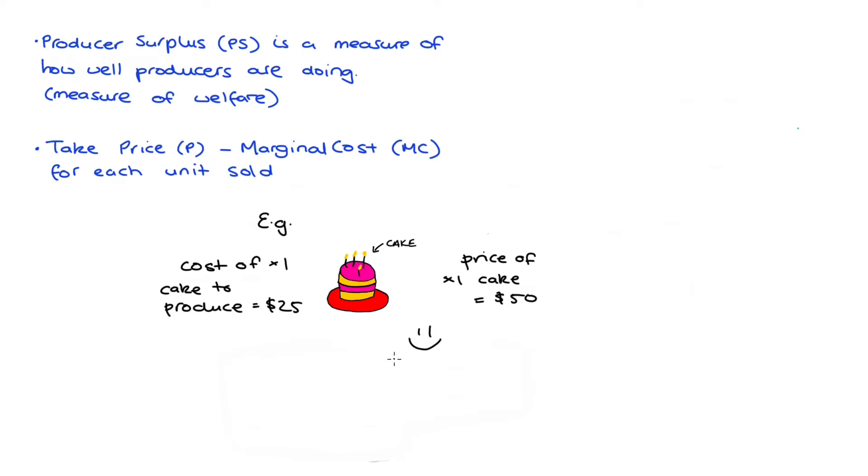Economists would say that I get an additional surplus, that is producer surplus or PS, of $50, that's the price, minus $25, that's the marginal cost, so equal to $25.